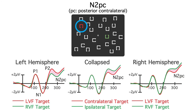For example, imagine that someone did an N2PC experiment and they were interested in implicit learning, so they had the target occur on the left side on 60% of trials and on the right side on the remaining 40%. You might expect to see a shorter N2PC latency for left side targets than for right side targets.